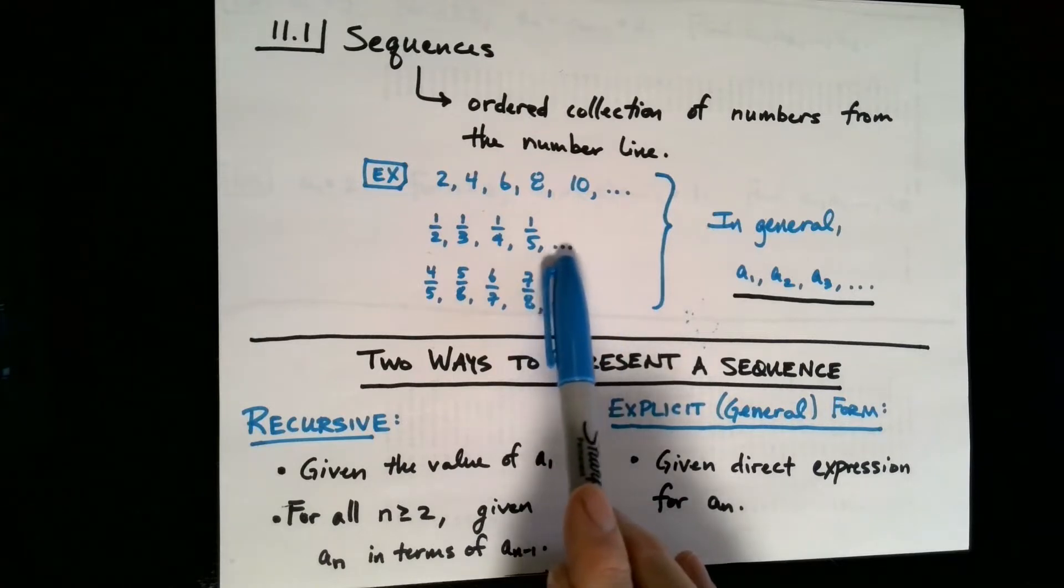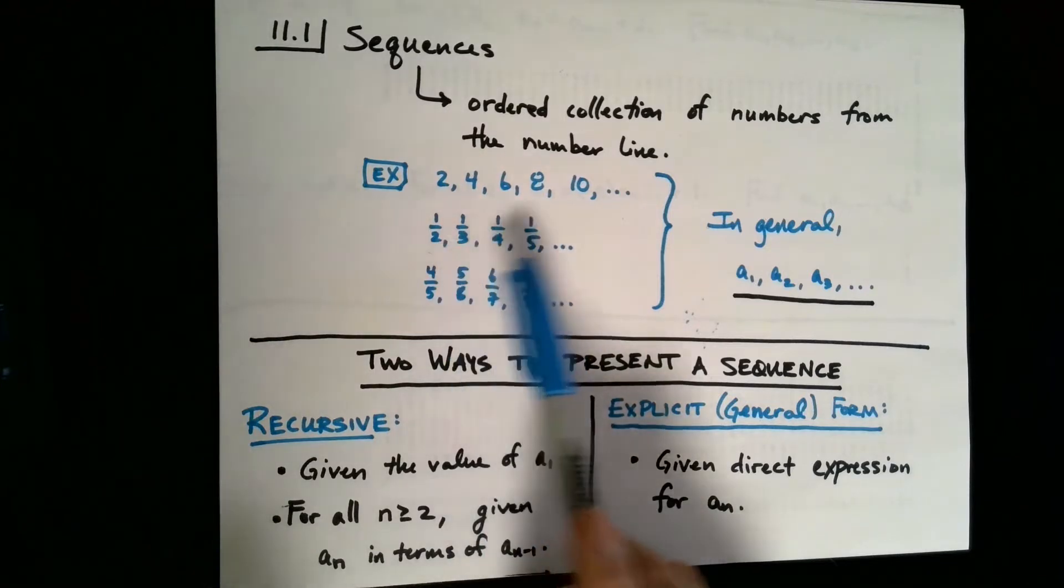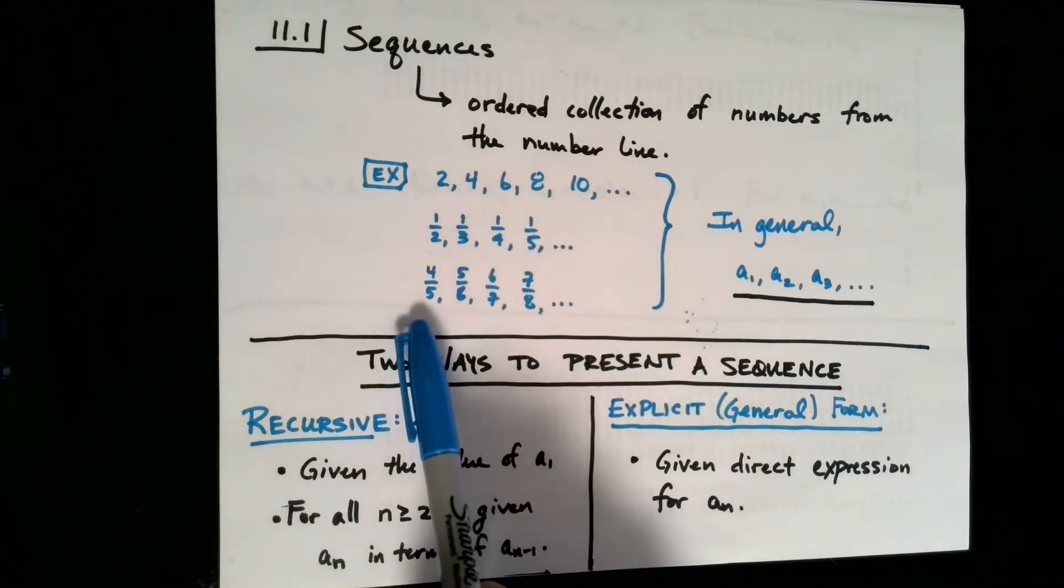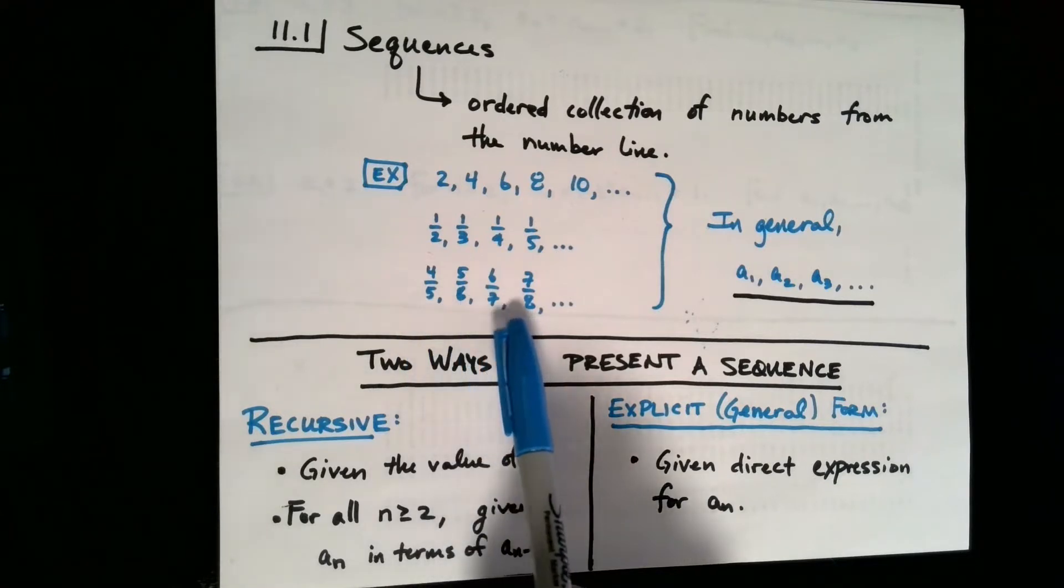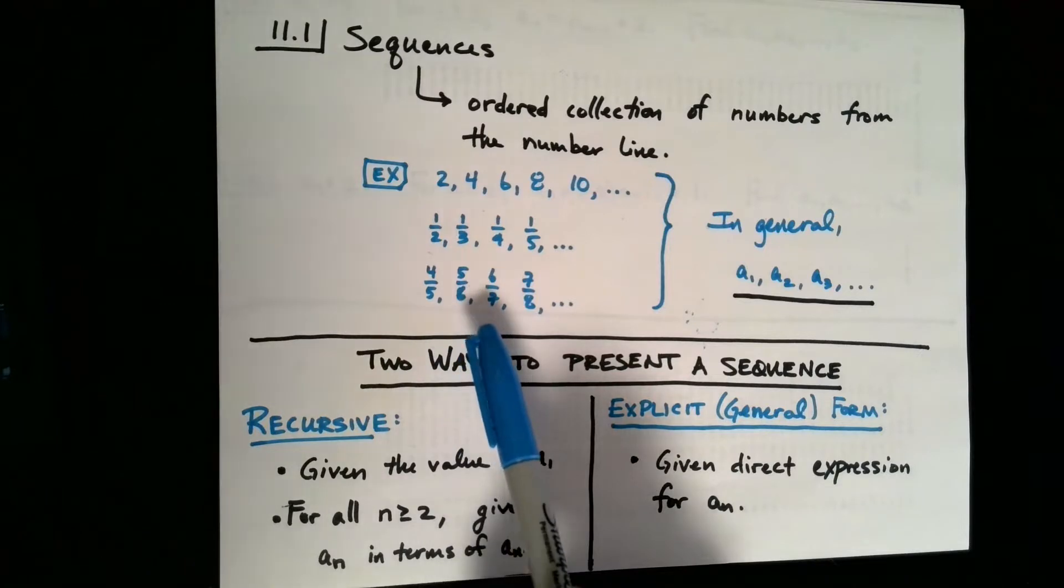So this collection, when we put this dot dot dot here, we're meaning that the collection goes on forever. But ultimately, if there's a pattern, the pattern is going to continue forever. Here's another sequence: four fifths, five sixths, six sevenths, seven eighths. Ultimately, there's a first number, a second number, a third number, and so on.